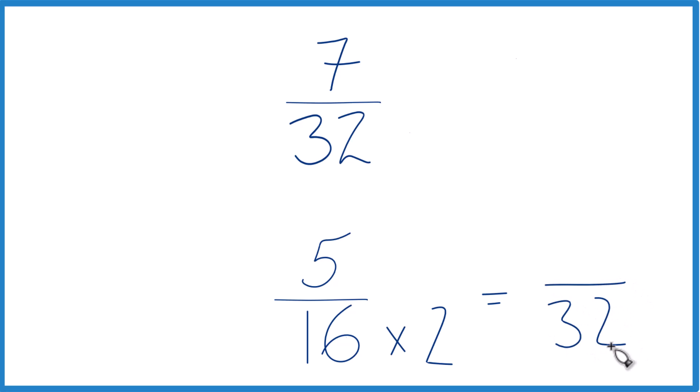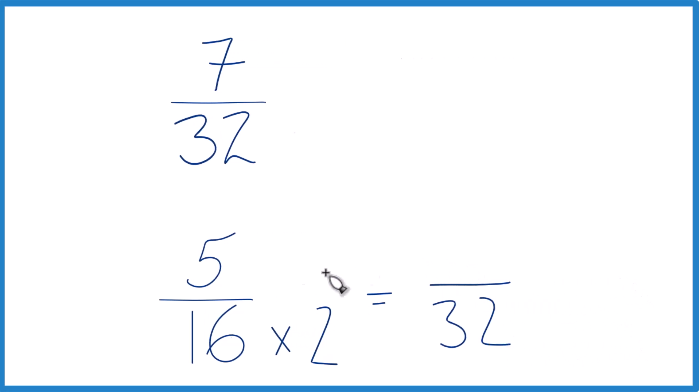So we have 32 as our denominator here. Since we multiply the denominator by 2, we have to multiply the numerator by 2. 5 times 2 is 10, so now we have 32 here and here. The denominators are the same.